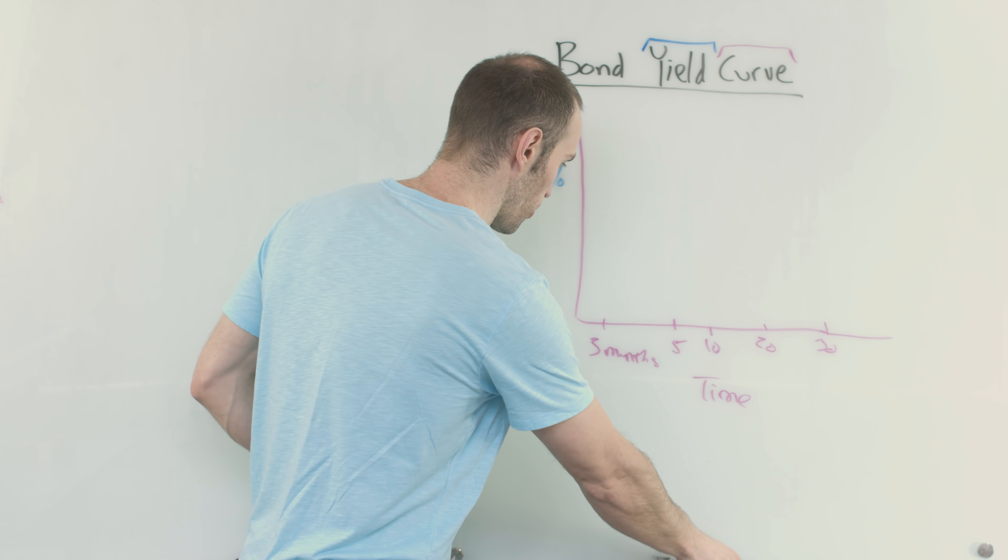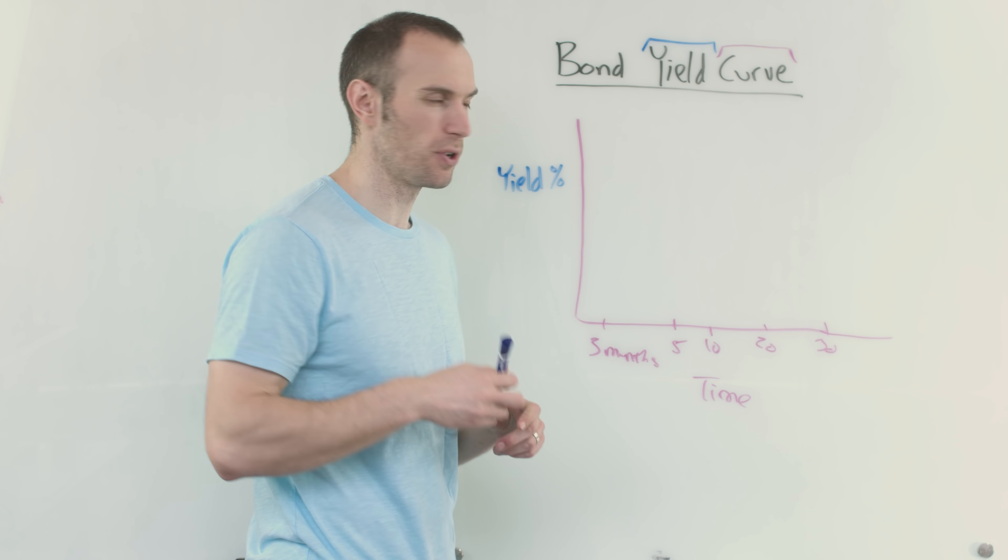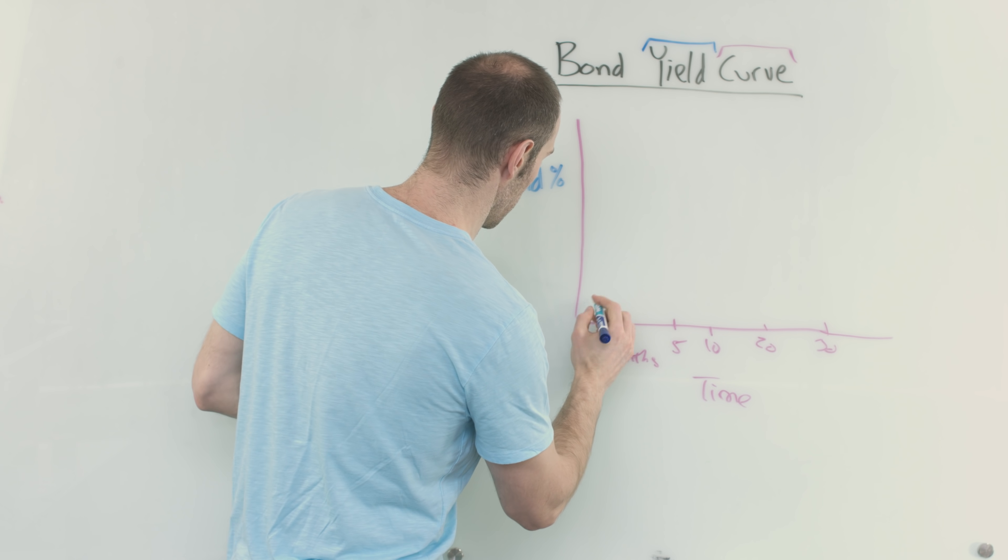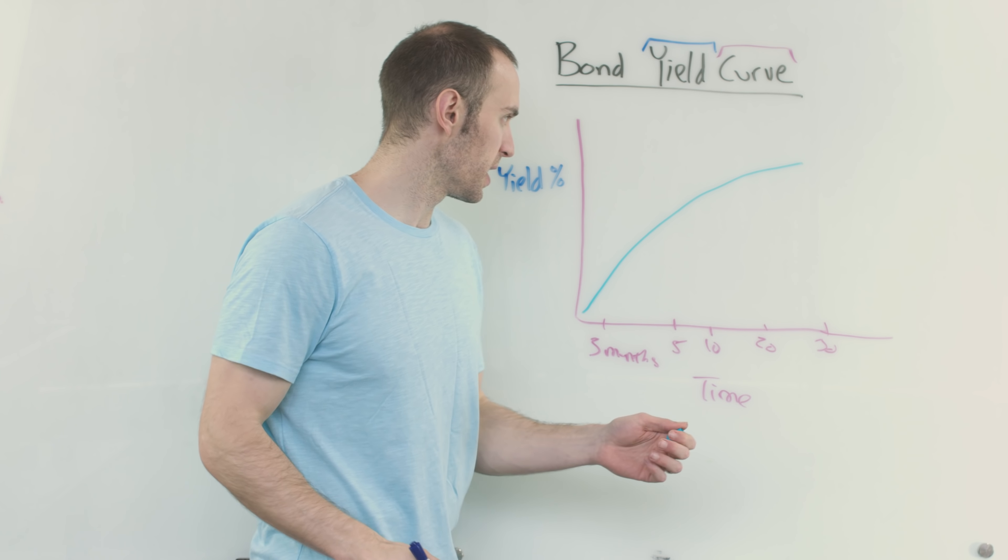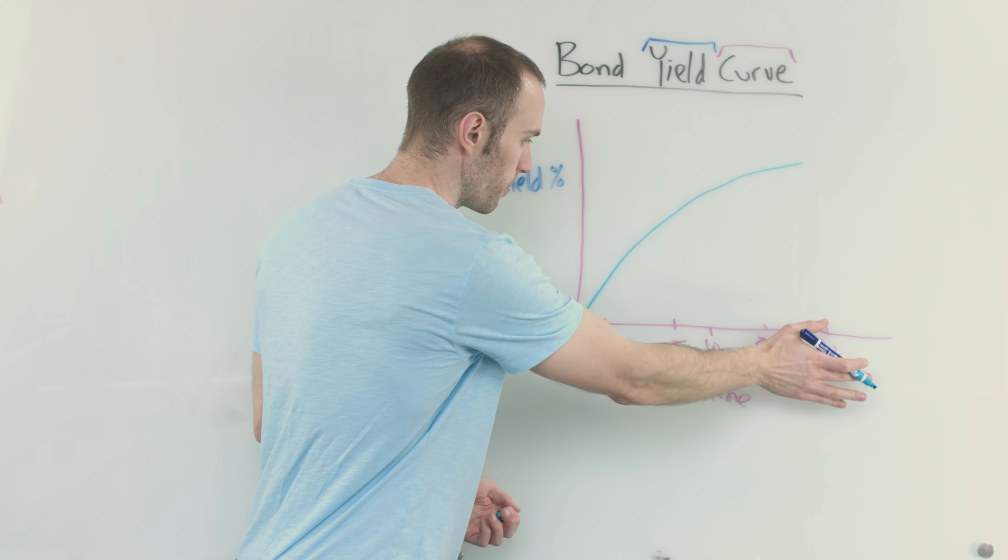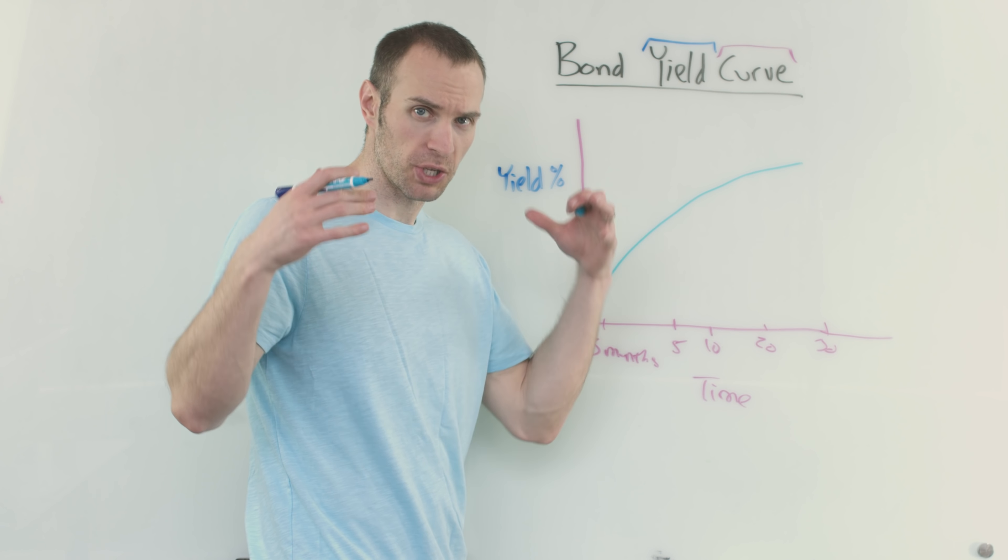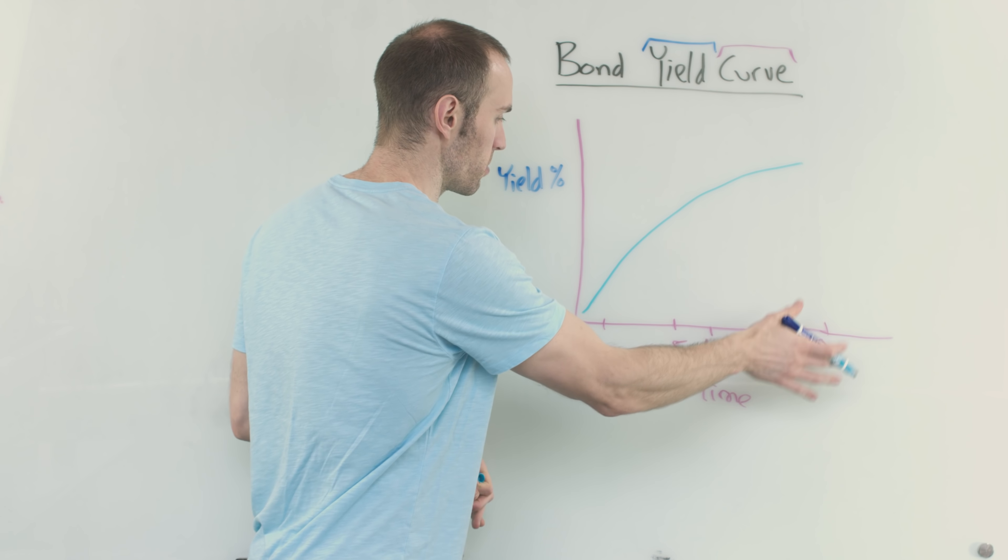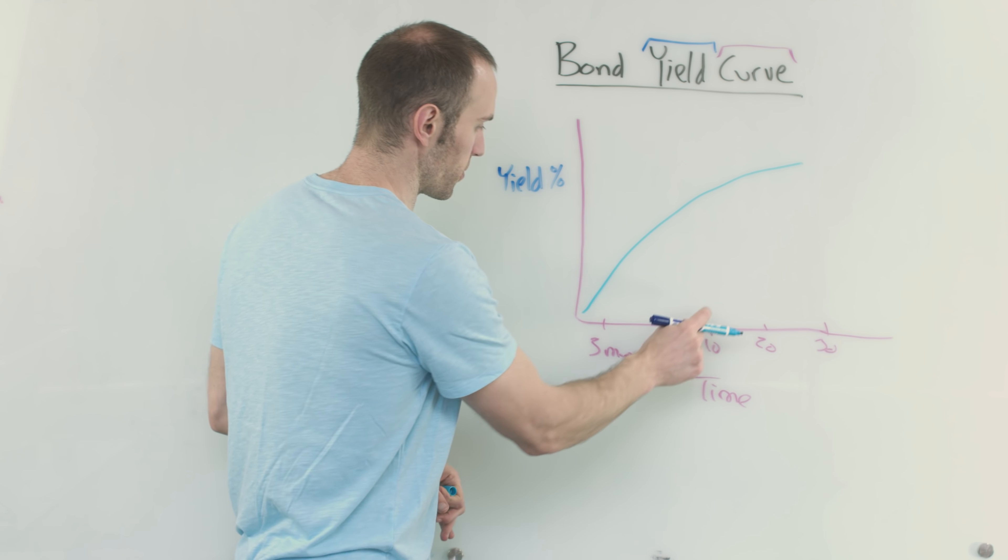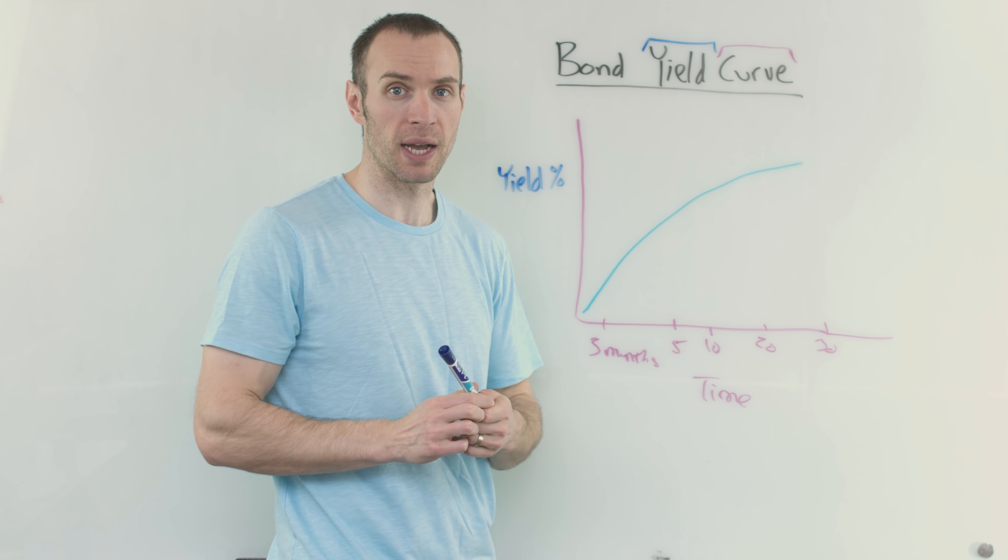The way that the curve actually functions normally, and I'll get to that in a future video, but is like this, meaning the longer the bond, as far as maturity - again, maturity being when you're paid in full, think back to the old video - but the longer to maturity, the higher the yield goes. So if you're 10, you're over here. If you're at 20, you're over here, so on and so forth. So that is what the normal yield curve looks like for bonds.